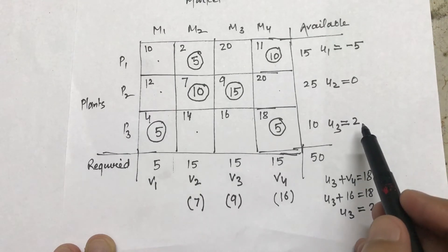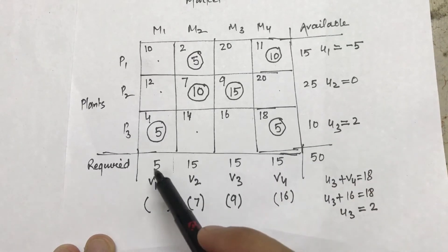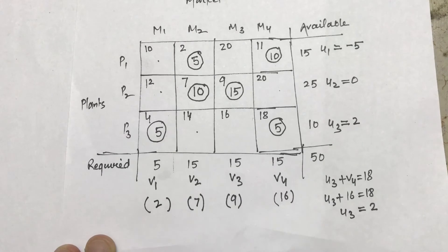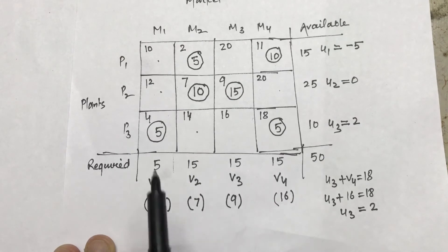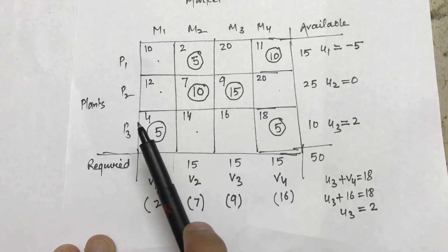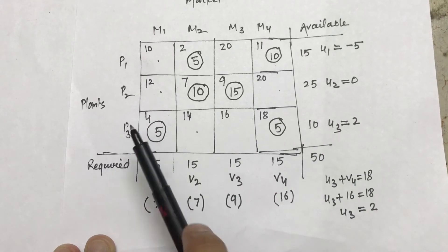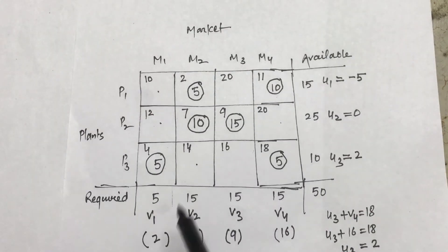Then I can calculate the value of v1, which is going to be u3 plus v1 is equal to 4, so 4 minus 2, it will come out to be 2. I don't think there is any confusion now. Again I'm repeating: u3 plus v1 is equal to 4, so then u3 value goes to the other side and becomes 2. So now I'll be putting up the values.